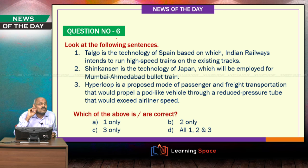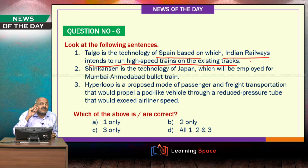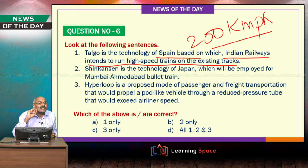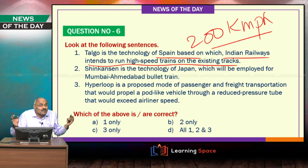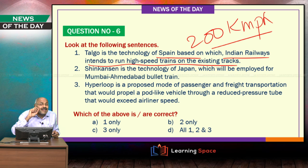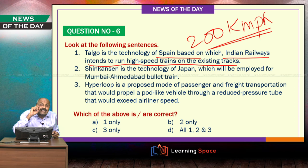Talgo technology was in the news in 2016. Talgo is the technology of Spain, based on which Indian Railways intends to run high-speed trains on the existing tracks up to 200 kilometers per hour — semi-high speed. At present, the maximum speed on Indian Railways is 160 kilometers per hour on a short stretch between Nizamuddin and Agra. Semi-high speed trains up to 200 km/h are going to be run on Indian Railways using Talgo technology from Spain.